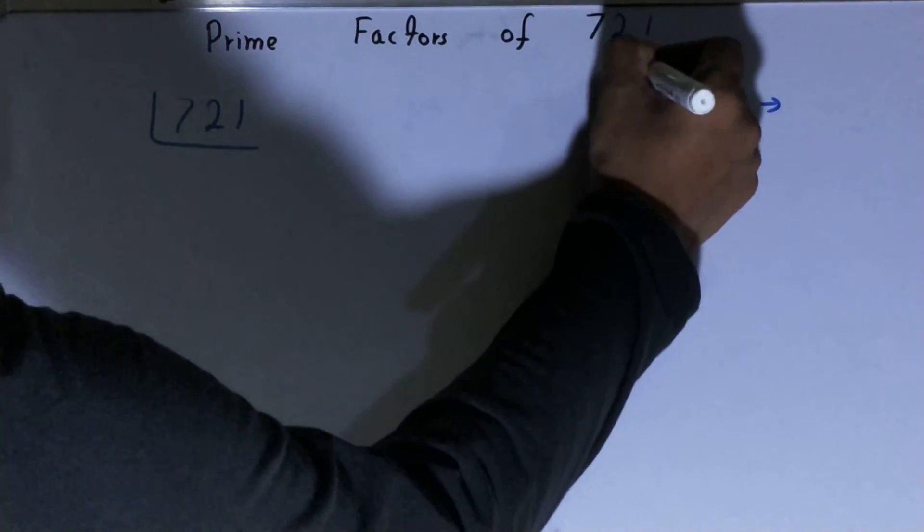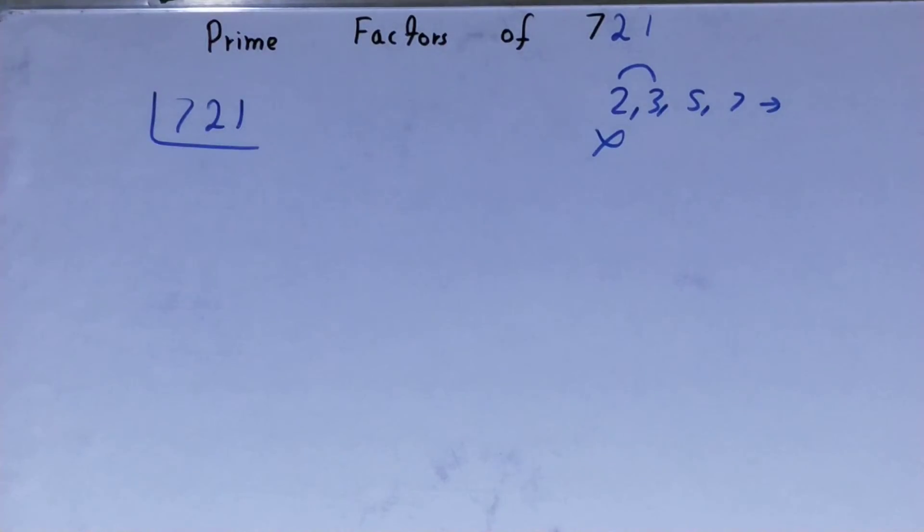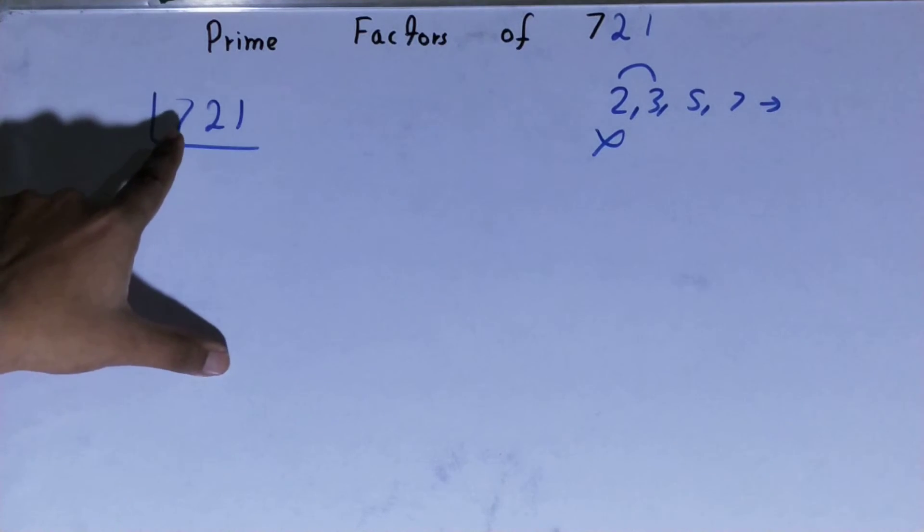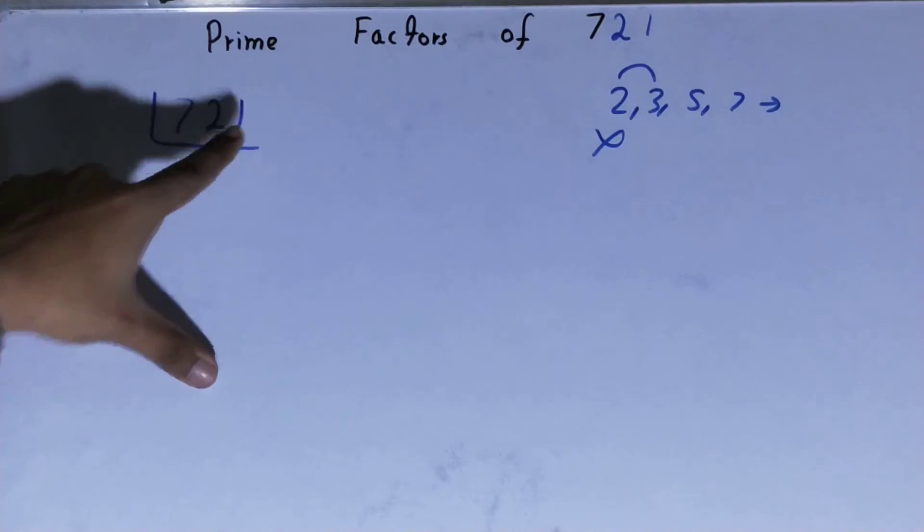So we'll be going to the next lowest prime number we have, that is 3. Is the number 721 divisible by 3? Let's check. 3, 2, 0, 6, 1, 2, 3, 4 is 12, 1 left. No, it is not divisible by 3.